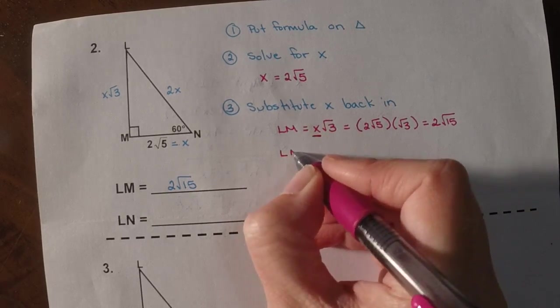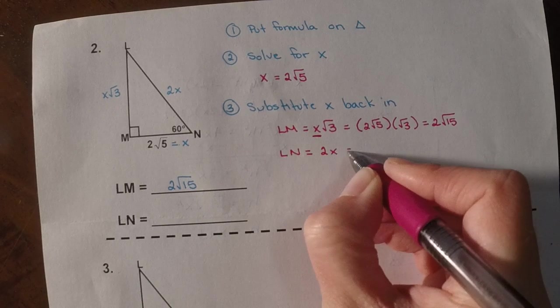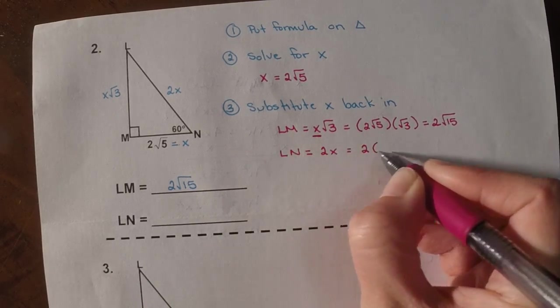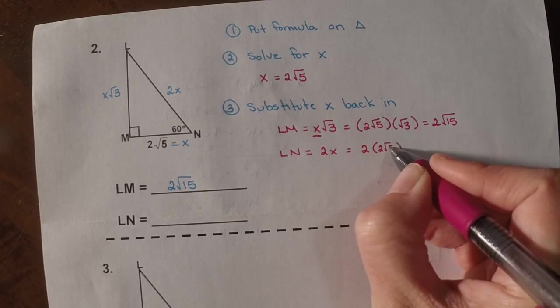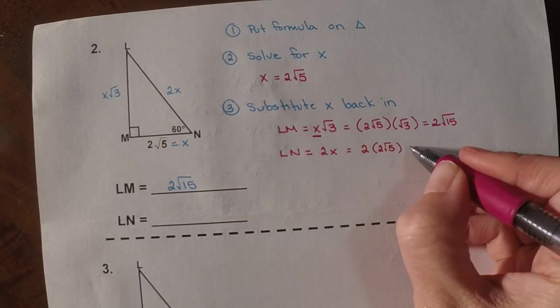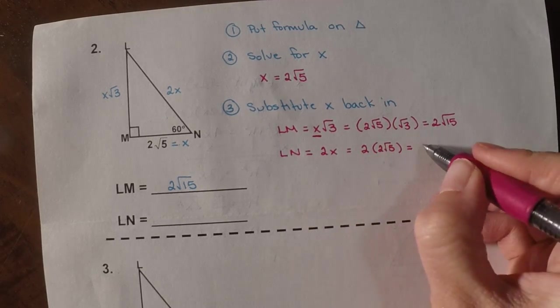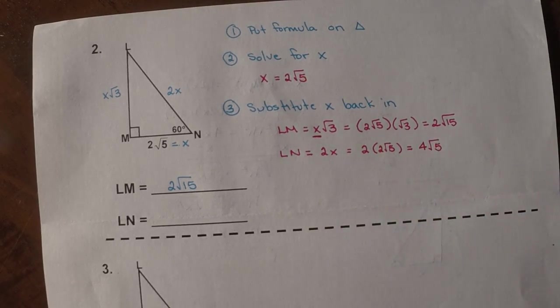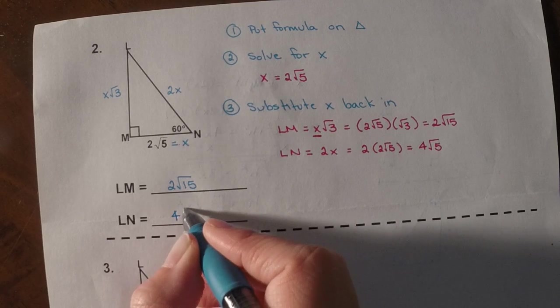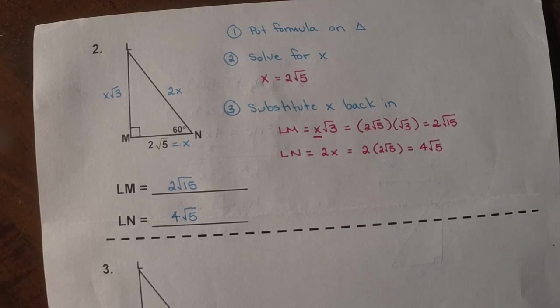Then they ask me for LN. LN is 2x. So again, I've got the 2, and then I'm putting my x value in. Well, x was 2 root 5. So now if I multiply, these two are the whole numbers. So 2 times 2 is 4. And then I still have the root 5. So LN would be 4 root 5. Good. So let's try another one.